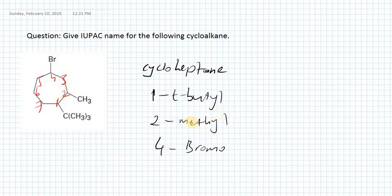The next thing: when you are writing the IUPAC name for a cycloalkane, you have to report the names based on alphabetical order. If you look at t-butyl, B is the first letter; we don't consider 't' as the first letter.